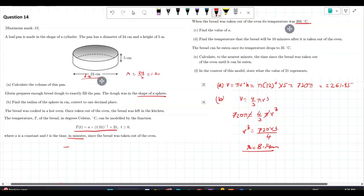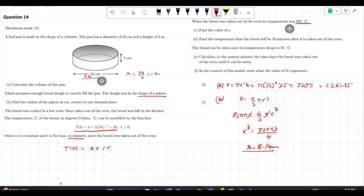So whenever you're doing the initial temperature, you put time as 0. a into 1.51 raised to 0 plus 21. The initial temperature was 205. So a plus 21 equals 205. So a will be 205 minus 21. So that's 184. You can do that easily. So a is equal to 184.